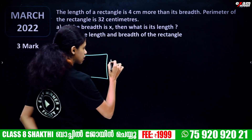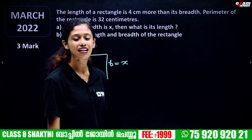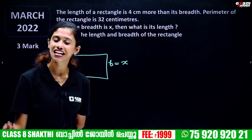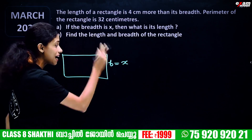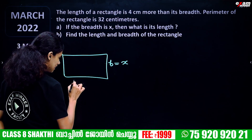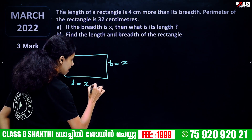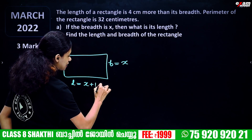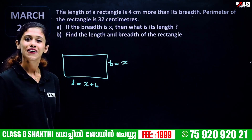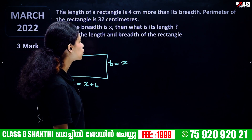So, breadth is x. Length is equal to x plus 4, because the length is 4 cm more than the breadth. The perimeter of the rectangle is 32 cm.